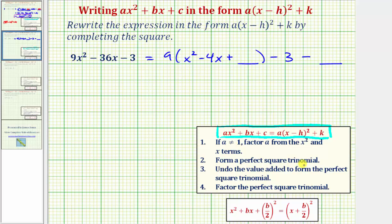Now step two, we want to form a perfect square trinomial. To do this, we add b divided by two squared here, where b is the coefficient of the degree one term, or the coefficient of x.